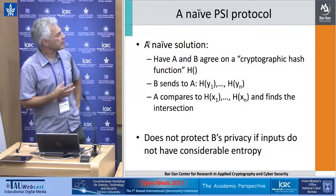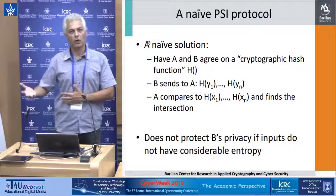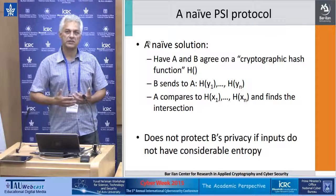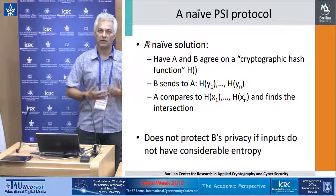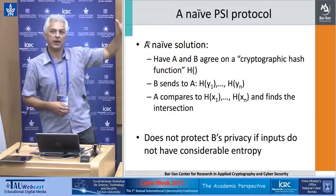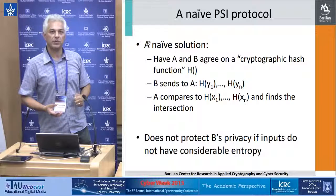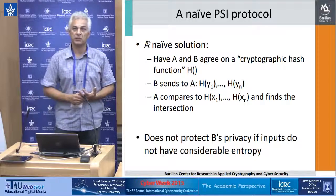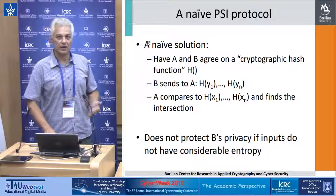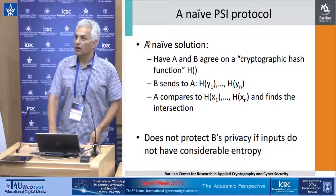The problem is that the inputs usually come from a small domain. If the input is an IP address, there are only 2^32 options. If it's a name, there are very few options. It's very easy for the parties to do an exhaustive search of all possible inputs, apply h to them, and see what the matches are. This is insecure, but it's actually what Facebook and the app companies are using, according to the press. So we were looking to design a more secure protocol.